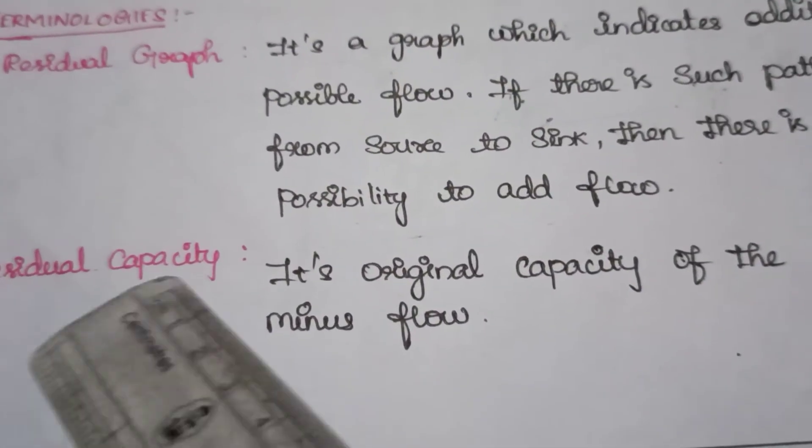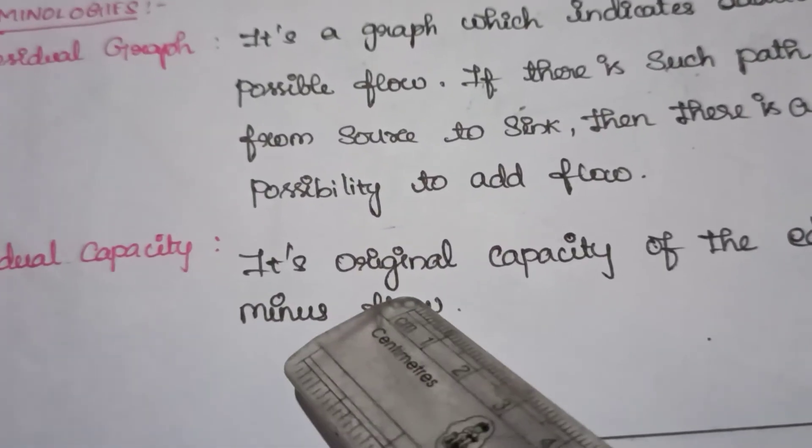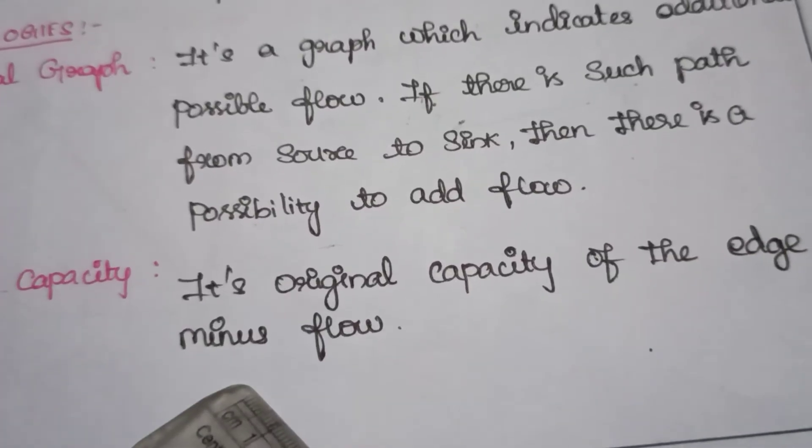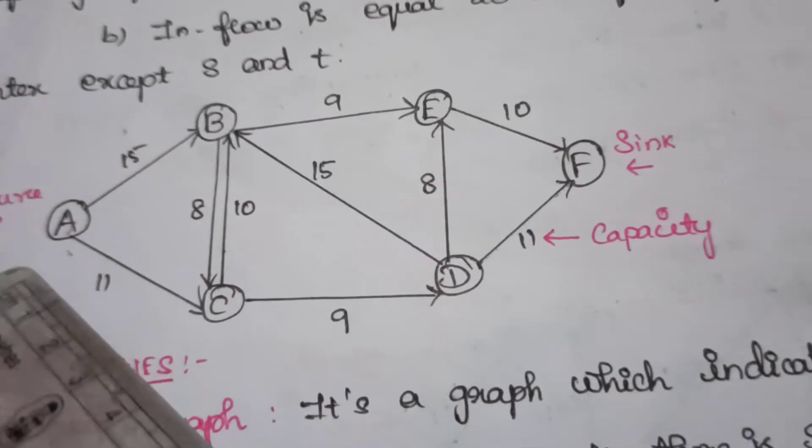Then we move on to residual capacity. Residual capacity is the original capacity of the edge minus flow. Look at the graph.